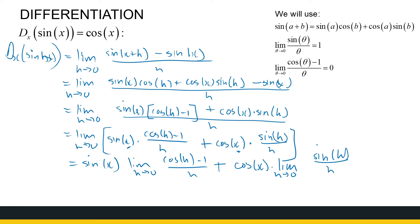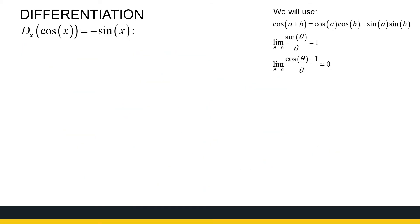Here come the two special limit values we looked at earlier. This means we have sine x times zero plus cosine x times one. So the derivative of sine of x is cosine of x — using the sum-of-angles formula, the two special limits, and the definition of the derivative.